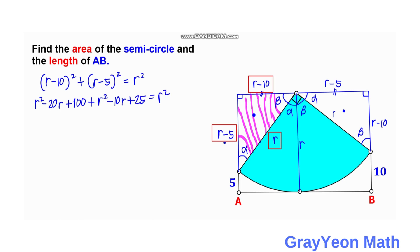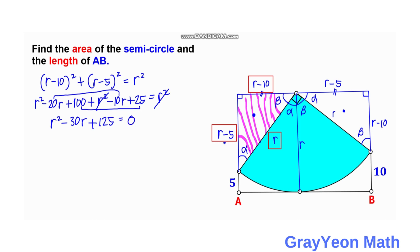We cancel one R² from both sides and combine like terms. Negative 20 minus 10 gives negative 30R, and 100 plus 25 gives 125, so we have R² − 30R + 125 = 0.